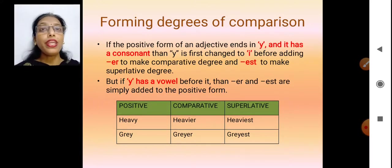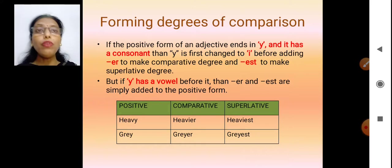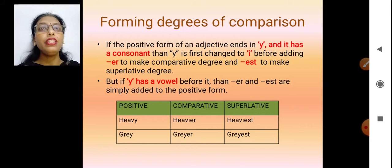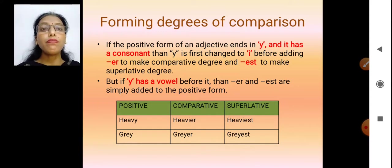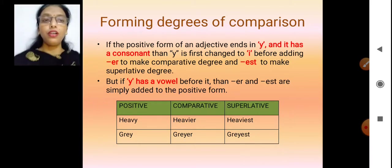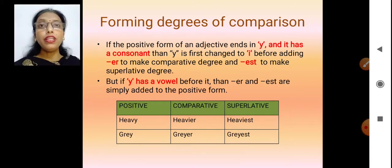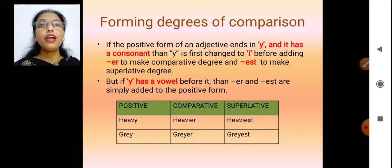Now if the word ends in -y, how will we make the comparative? We take away the -y and put -i, then add -er. So -er is always there in the comparative; in place of -y we put -i, making -ier. Similarly in the superlative, we take away -y, put -i, and add -est, making -iest. For example: heavy, heavier, heaviest.